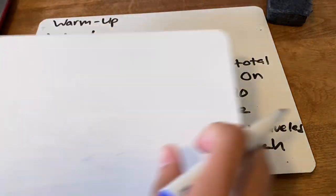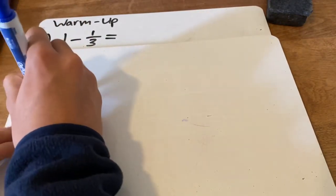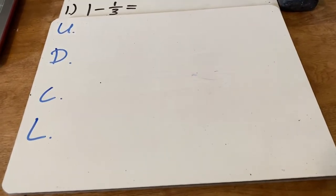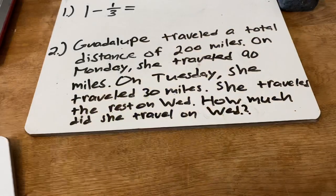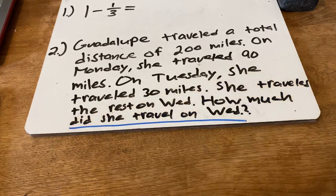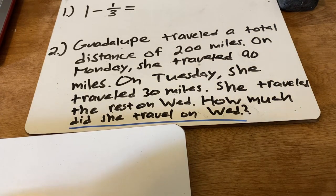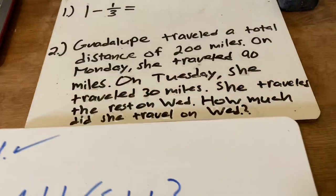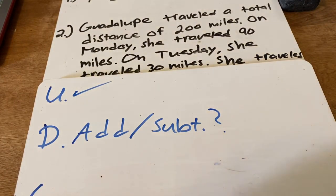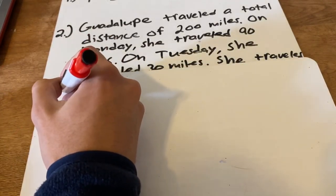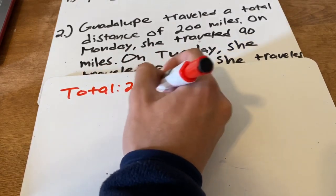This is a perfect opportunity to use a UDCL model. U — do I understand the problem? Yes, I have to figure out how much she traveled on Wednesday. That's what I need to solve for. D — make a plan. I might have to use an order of operations: adding, maybe subtracting. C is where you actually solve for it. She traveled a total distance of 200 miles — so I'm going to do a tape diagram. Total: 200 miles.